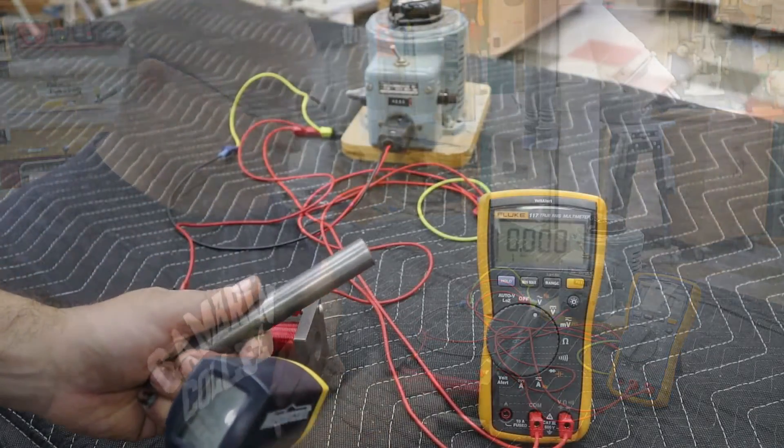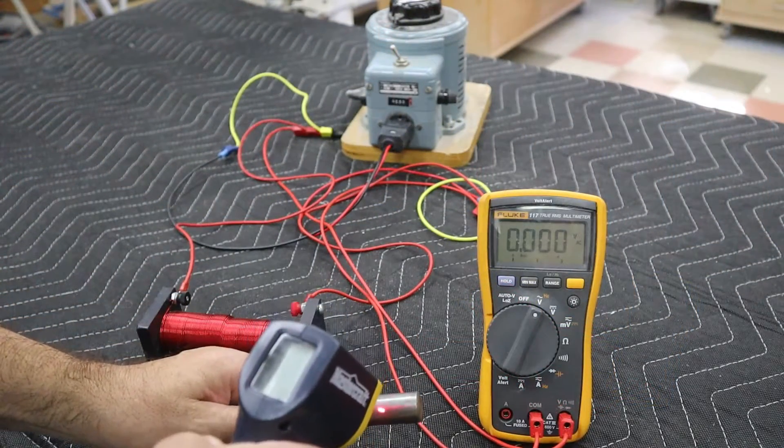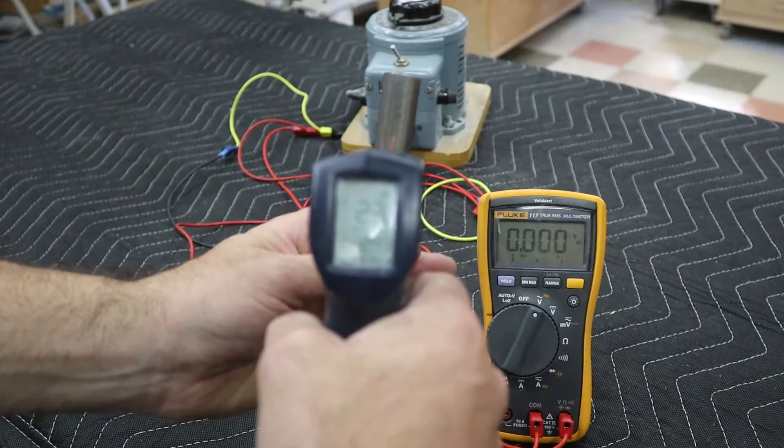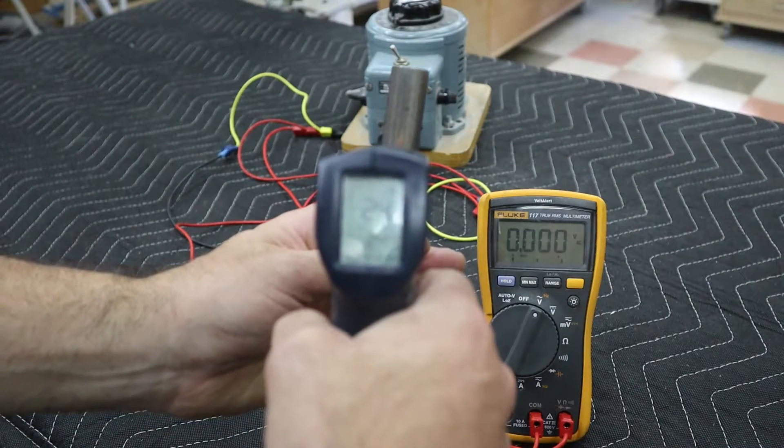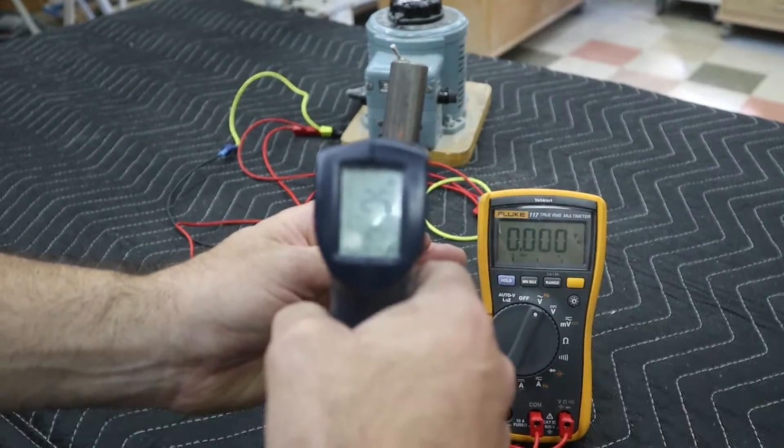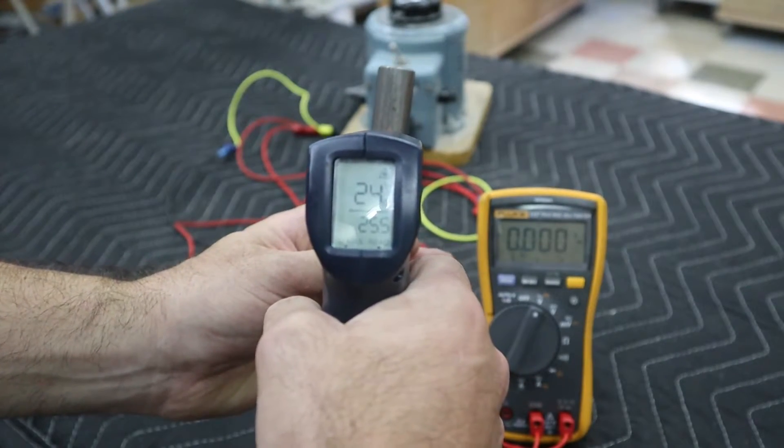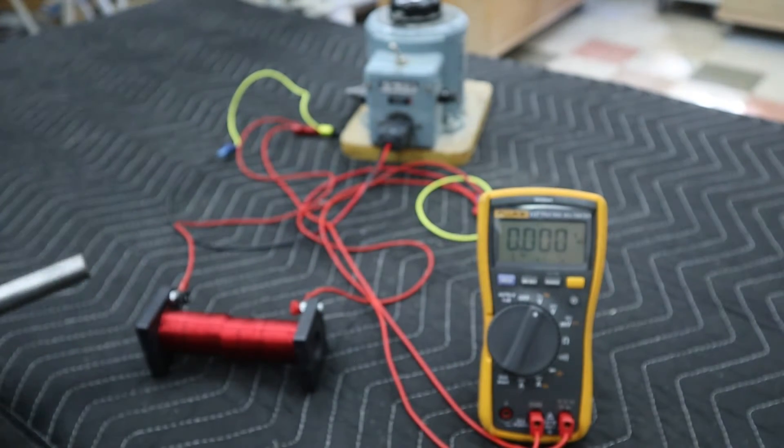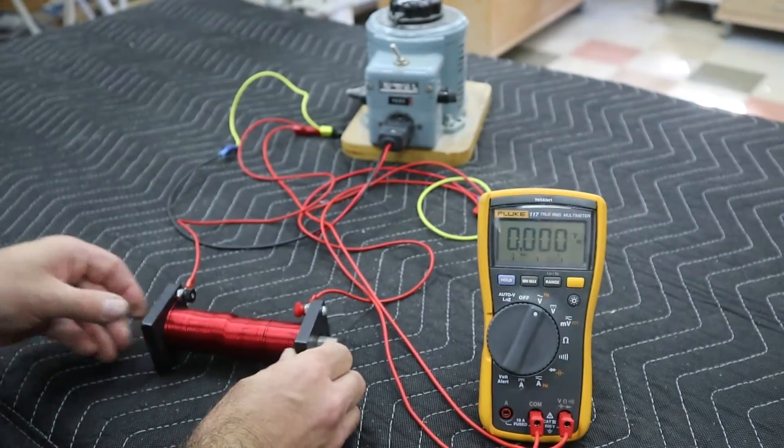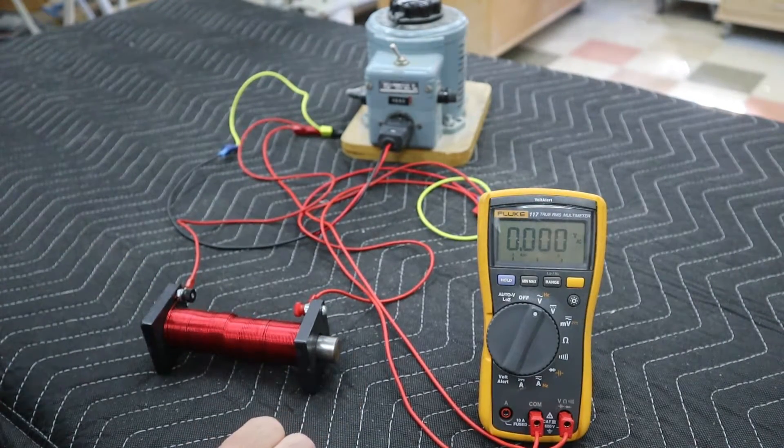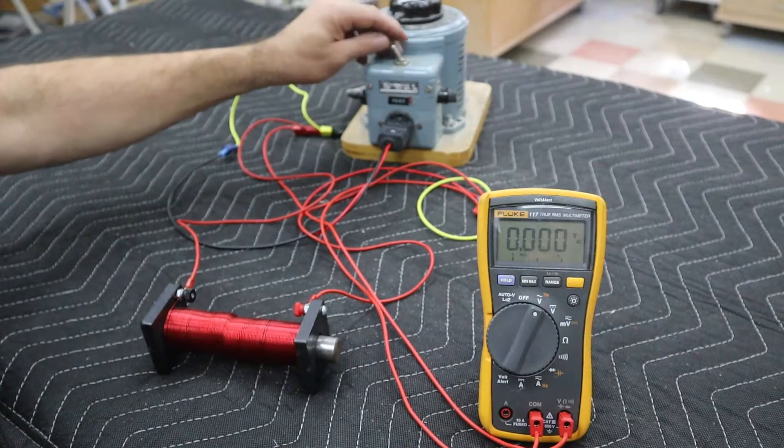We're going to take a temperature reading of the bar, about 23 and a half degrees, 24. We're going to put that into the coil and turn the power on.